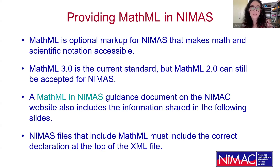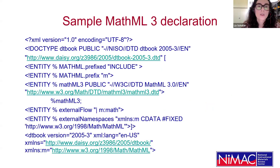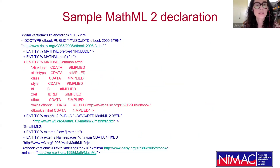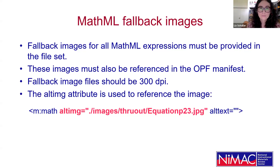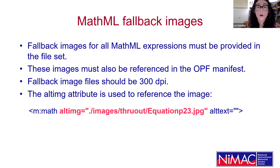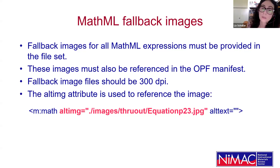You'll see the sample MathML 3.0 declaration and the sample MathML 2 declaration in the MathML and NIMAS guidance document. Even though MathML tagging provides those expressions in the XML itself, we do require that fallback images be provided for all MathML expressions in your file set. These images must be referenced in the OPF manifest, and the fallback image file should also be 300 DPI. The fallback images are important because not all software utilized to produce accessible formats from NIMAS can process MathML correctly, so our accessible media producers will want to utilize those fallback images instead.